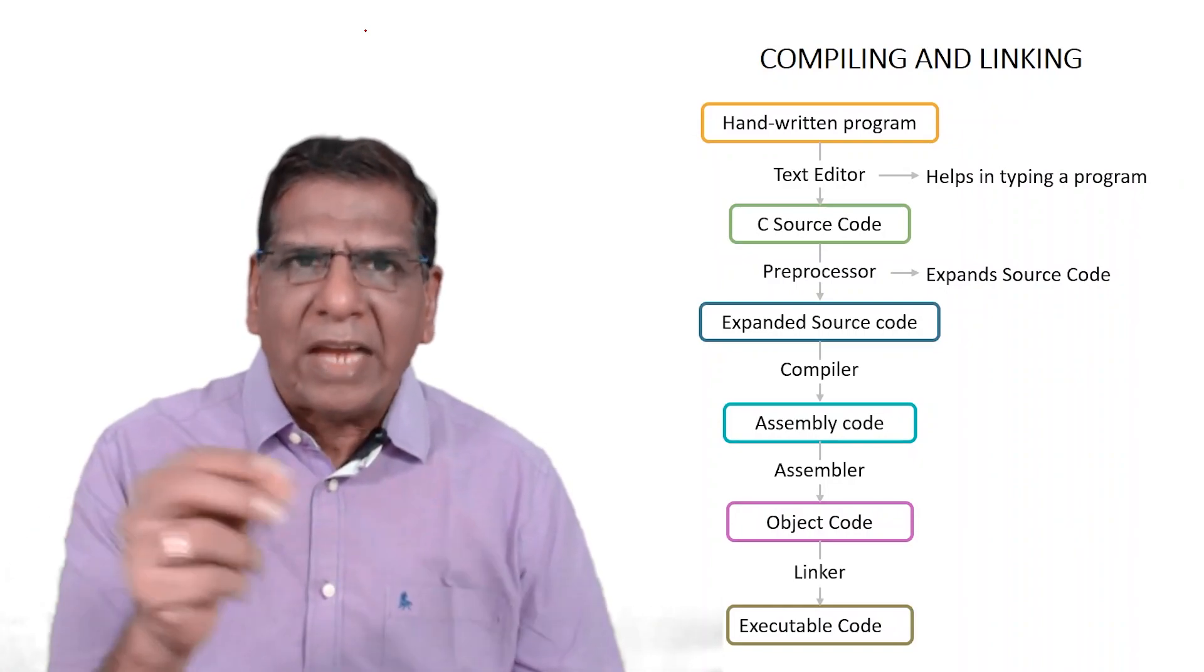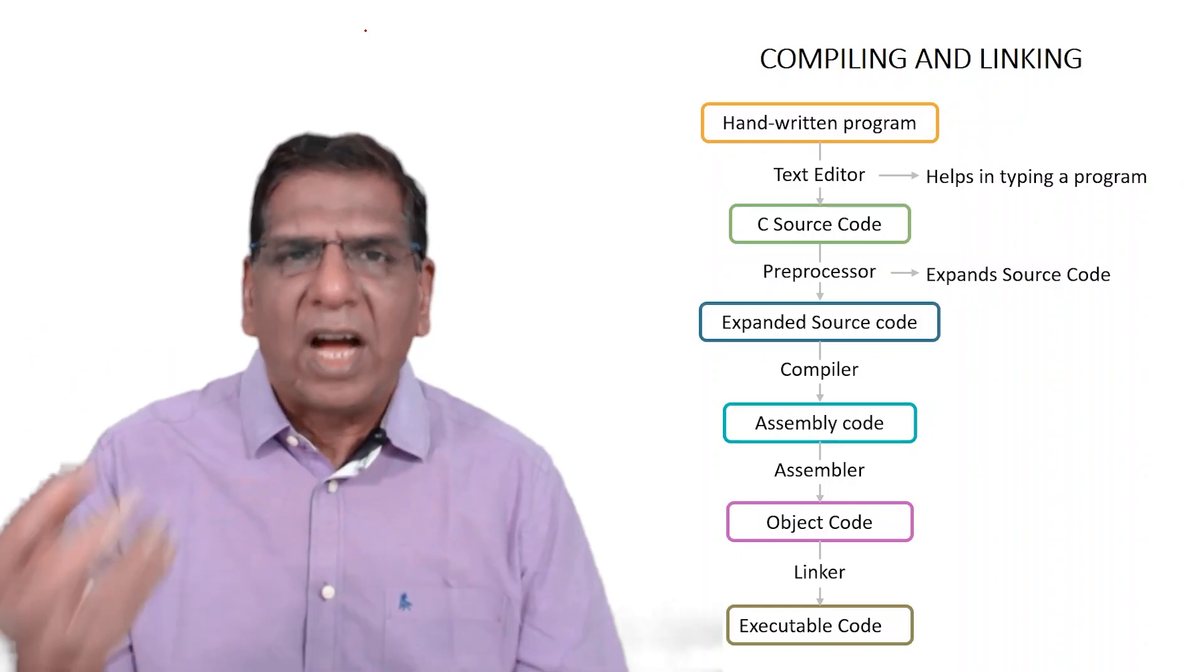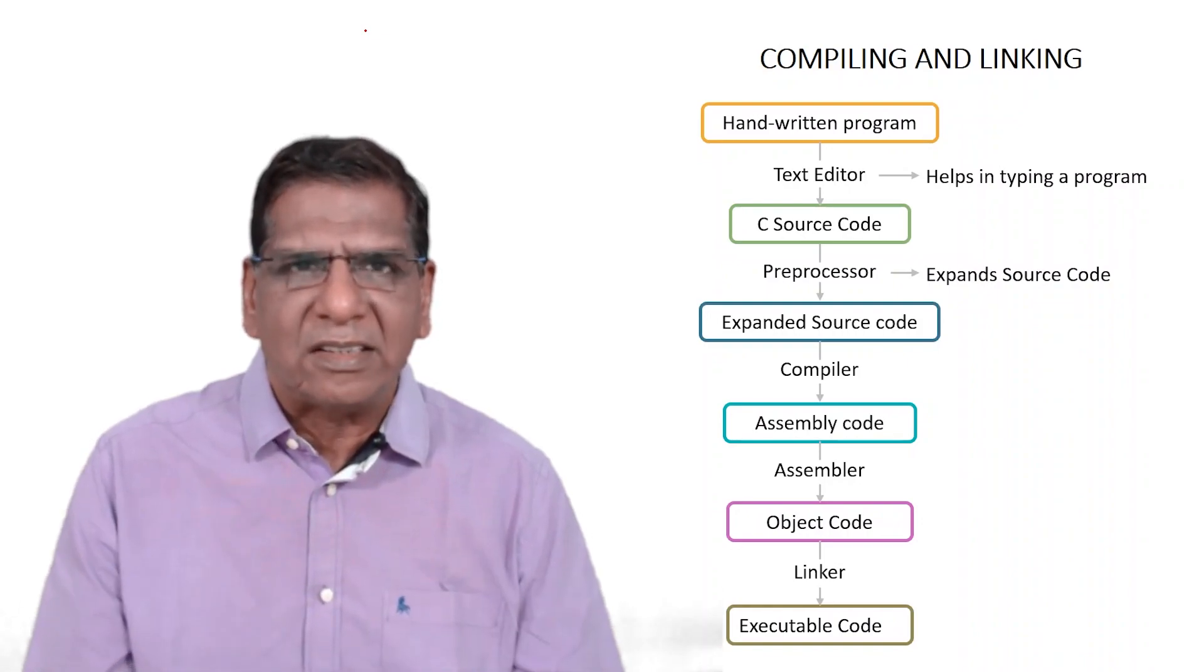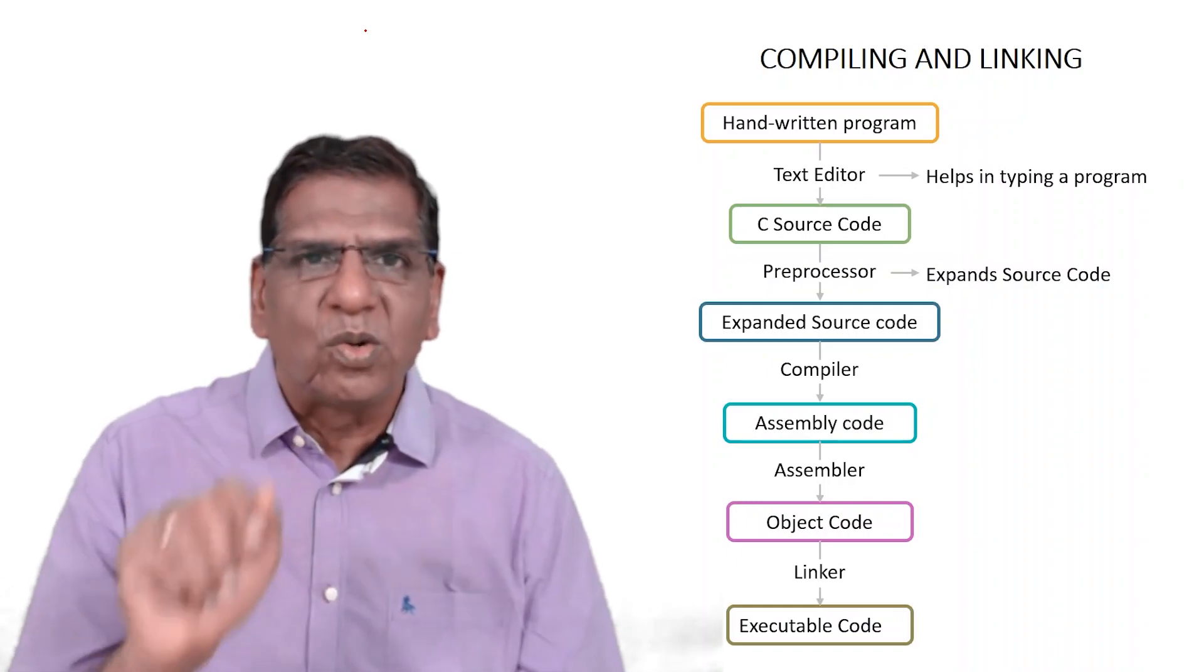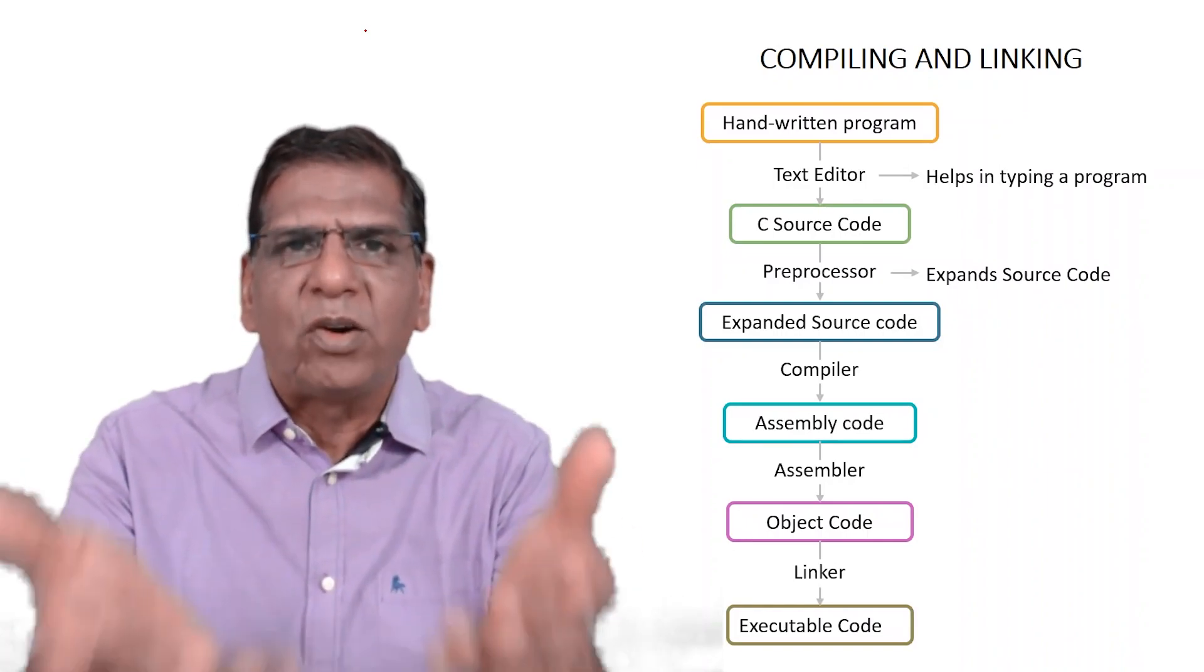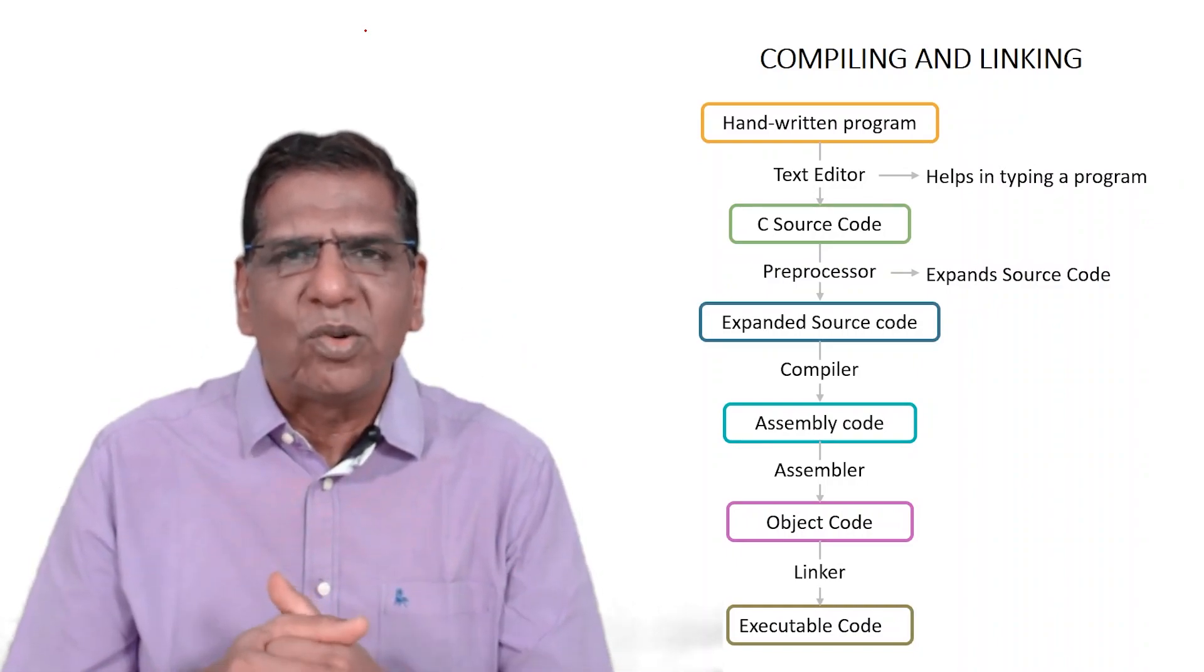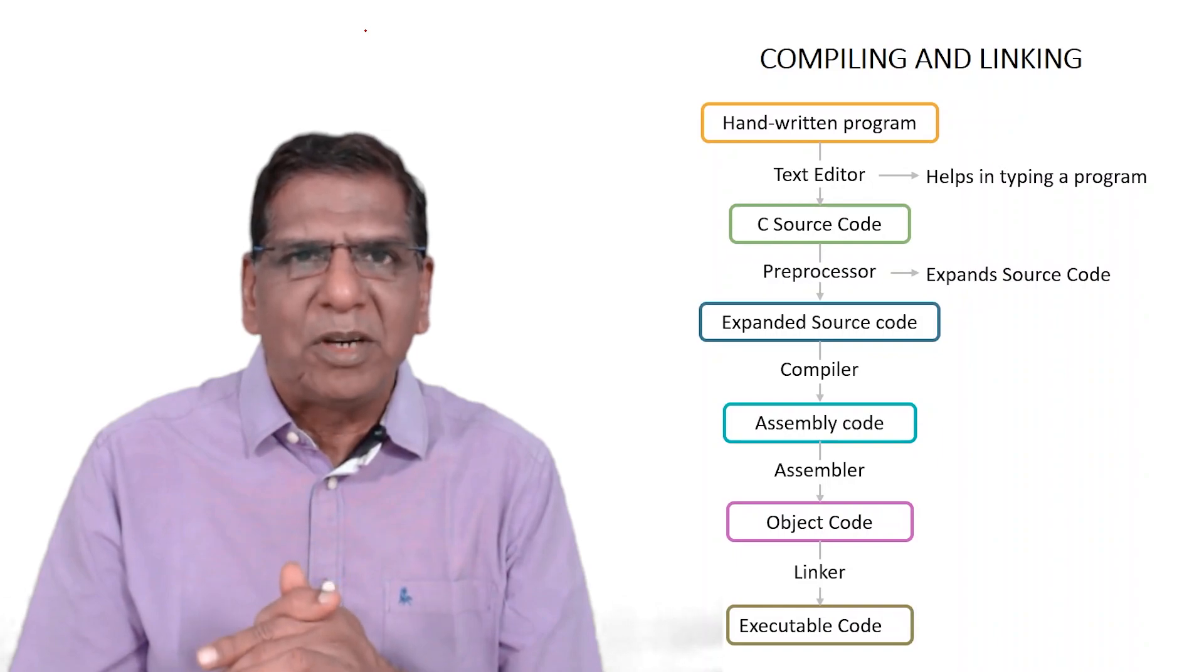Just to give you an example, hash include stdio.h happens to be one of the pre-processor directives. How do I know that? Because it begins with hash. Every pre-processor command or directive always starts with a hash. That hash signals the pre-processor that you got to do something with this. When you do hash include stdio.h, what this pre-processor does is it reads stdio.h, brings in the code present in it, and places it right where you've done hash include stdio.h. And what it contains is prototypes of a variety of library functions.